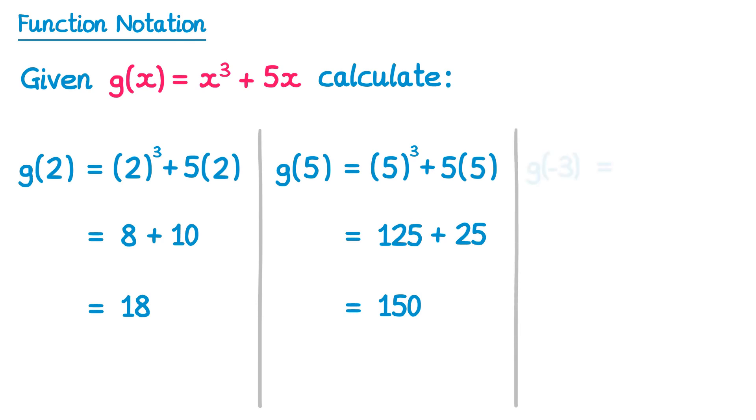And for the final one we've got g of negative 3. So we'll write bracket cubed plus 5 bracket again and then replace those brackets with negative 3s. Negative 3 cubed is negative 3 times itself times itself again which gives you negative 27. And a positive 5 times a negative 3 is negative 15. So negative 27 take 15 is negative 42.